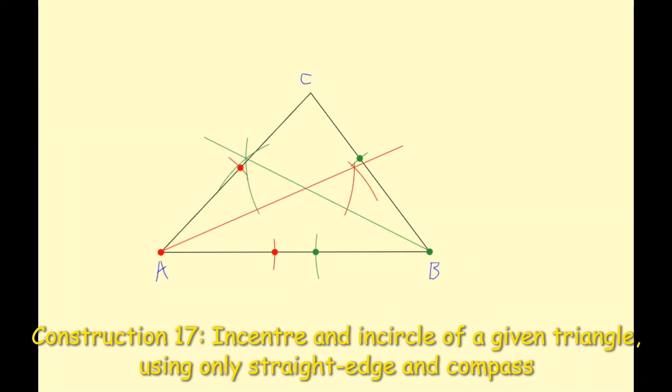I don't need to carry out the bisector of angle C. You can if you want, but you will see that it will also intersect at the same point here. So I'm going to put a dot here where the green line and red line intersect. And that is what's known as the incentre.